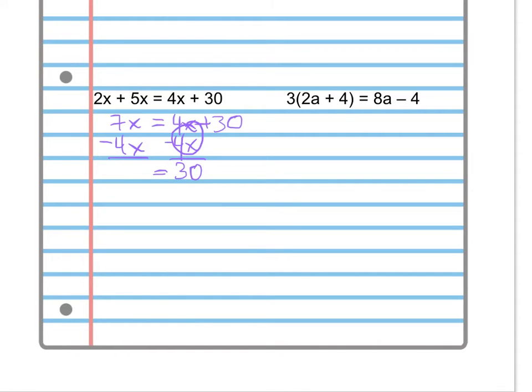On the other side, we get 7x minus 4x is 3x. So we end up with 3x equals 30. Now I just divide both sides by 3 because that's the number that's attached to the x by multiplication. So we use the inverse operation division by 3 so that those 3's will cancel.